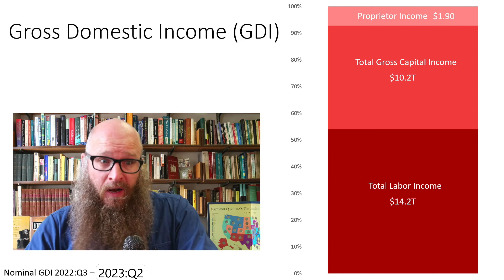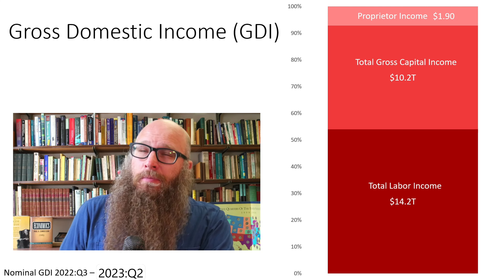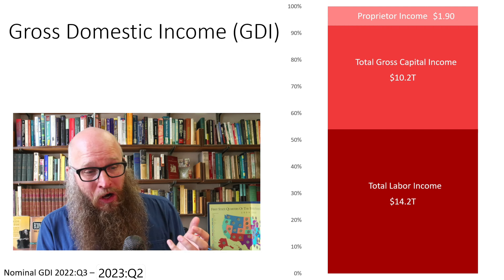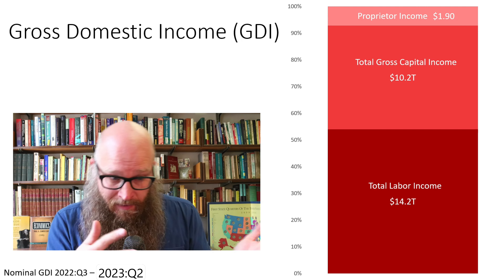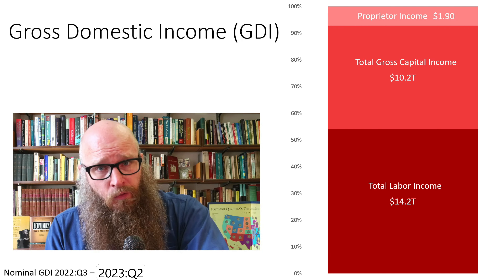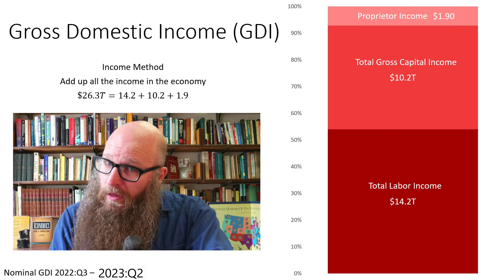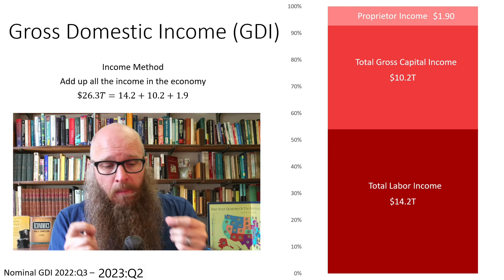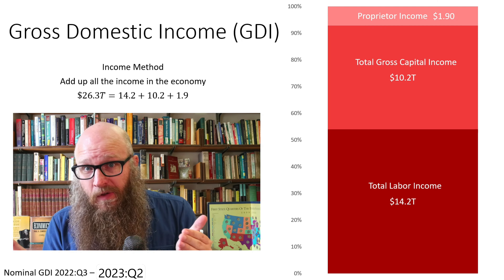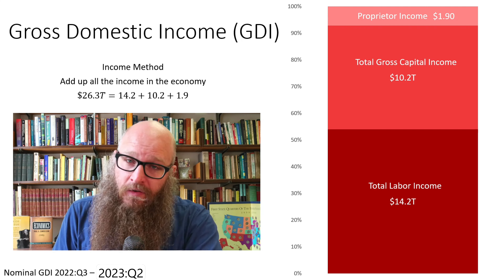The total labor income is around $14 trillion, and the total capital income is around $10 trillion. The difficult bit is proprietor income — for unincorporated businesses, both the laborer and the owner are the same people, so it's hard to differentiate what is exactly capital versus what is exactly labor. And it's not trivial — that's $1.9 trillion worth. The income method adds up all of the income in the economy, yielding $26.3 trillion. We don't have the exact same number as the expenditure method, and the difference we simply refer to as the statistical discrepancy, because all this data is estimated from very large but not universal statistical samples.